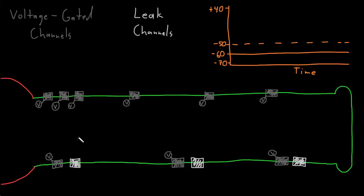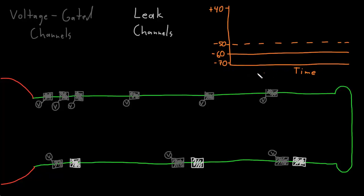In this video, I want to talk about how action potentials are generated at the trigger zone and how they're conducted down the axon. I've drawn a soma here in red and one axon in green, blown up to a very large size to have some room to draw. Here's a graph of the membrane potential on the y-axis and time on the x-axis.